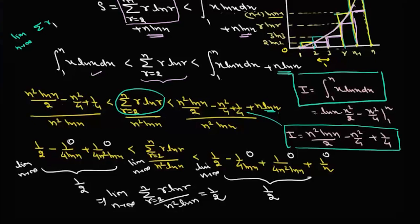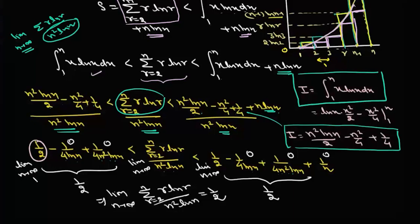Now we divide everything by n²·logn. The lower bound becomes: (1/2) − (1/(4·logn)) + 1/(4·n²·logn), and the upper bound becomes: (1/2) − (1/(4·logn)) + 1/(4·n²·logn) + 1/n. Taking the limit as n tends to infinity: logn tends to infinity so 1/logn → 0, 1/(n²·logn) → 0, and 1/n → 0. So both bounds tend to 1/2.